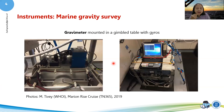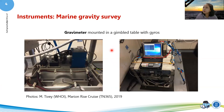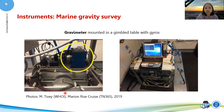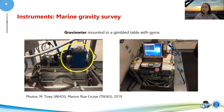Now that we understand the physics, let's look at the instruments. The instrument is called a gravimeter, mounted on a gimbal table with gyros. This photo is from Morris Tivey on a cruise last year. The gimbal table moves while the gravimeter catches the signal. Everything is securely attached — the gimbal system is stabilized and the computer is installed on top of it.